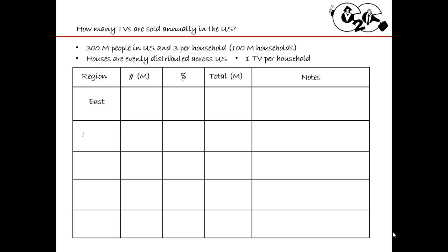The four regions I'll use are the East Coast, the Midwest, the West Coast, and the South — and that's the total. I apologize to anyone from Hawaii or Alaska. Since I said households are evenly distributed, 100 million divided by four groups gives me 25 million households per group.